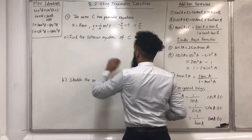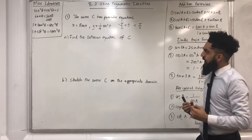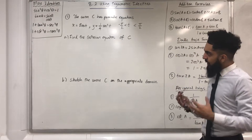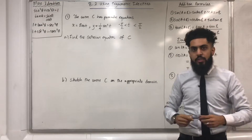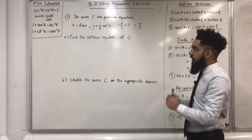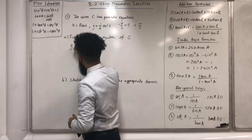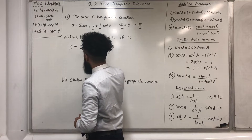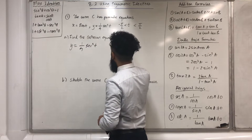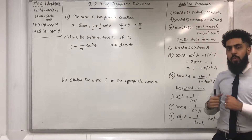Part A: Find the Cartesian equation of C. The Cartesian equation of C is just an equation that connects y and x, so we need to find this equation. The very first step is to write down the parametric equations: y equals 1 over 4 sec²(t) and x equals 8cos(t). I need to somehow connect y and x.